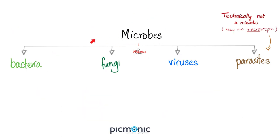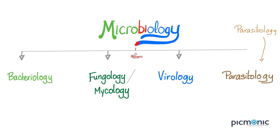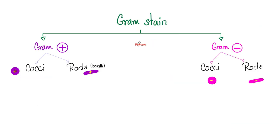Microbes are bacteria, fungi, viruses, and parasites. The field of microbiology deals with bacteriology, fungology or mycology, virology, and parasitology. By using the gram stain, we can divide them into gram positive and gram negative bacteria. If you're gram positive, you're either a coccus or a bacillus. Gram negative is similar, although we can also have coccobacillus, which is kind of in between.